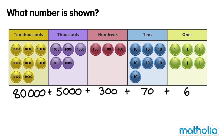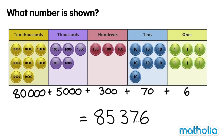Now let's add the values of each place. 80,000 plus 5,000 plus 300 plus 70 plus 6 equals 85,376. The number shown is 85,376.